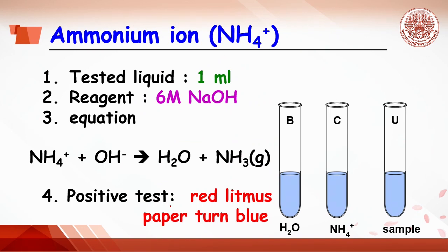The last ion to be tested is ammonium ion. It reacts with hydroxide from sodium hydroxide to get the ammonia gas, which turns the red litmus paper to blue.